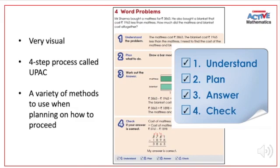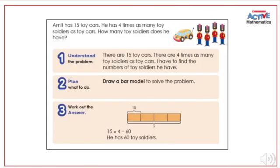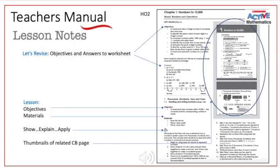Details on how to go about this and everything in the course book are given in the teacher's manual, which we're going to look at in just a minute. Bar modeling — an extremely popular and effective way of solving word problems — makes an appearance very often as a strategy to solve word problems throughout the book. And now the teacher's manual, which guides the teacher at every step of the way: what are the learning objectives, what are the materials required, how do we exactly go about the show, explain, apply methodology? Plus a thumbnail — a short, crisp graphic of the page in the course book to which the lesson plan applies.